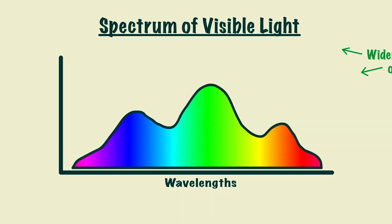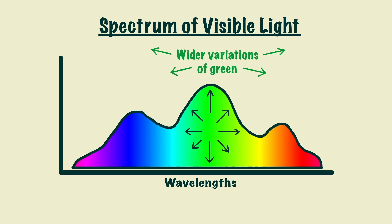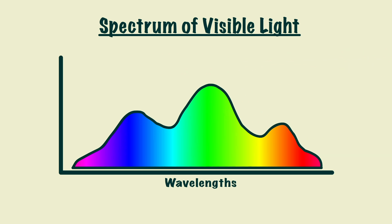We do, however, get a wider variation of green, because it's in the middle of the colour spectrum, so there isn't the same drop-off on either end. Therefore, we need more photosites on the sensor to reflect that.